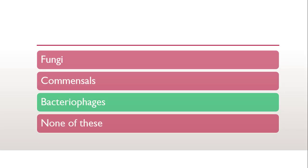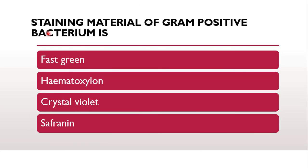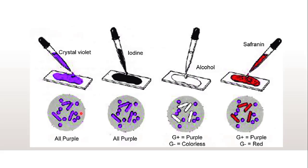The next question is: the staining material of gram positive bacterium is — which is again very important from the exam point of view, whether it is MCQ or question-answer format. Whether it is fast green, hematoxylin, crystal violet, or safranin. Before going to the material, we will first have a quick view about gram staining.